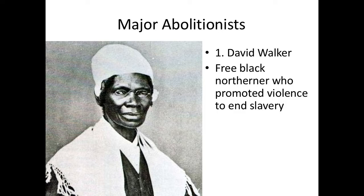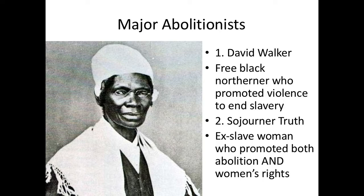The next abolitionist is Sojourner Truth, a woman who had lived under slavery. She had a double burden in society: not only was she black in a dominantly white society, but she was also a woman. She knew what it was like to be oppressed because of her race and her sex. She was known for being incredibly eloquent — a very good speechmaker — and made a famous speech called 'Ain't I a Woman,' promoting both the abolition of slavery and women's rights.